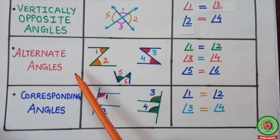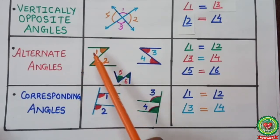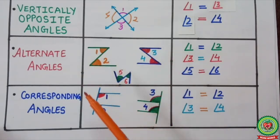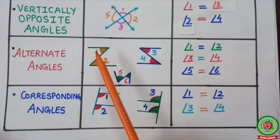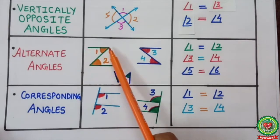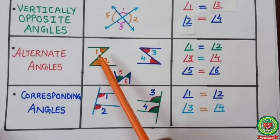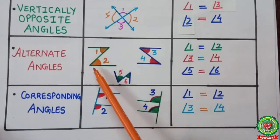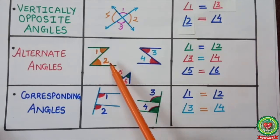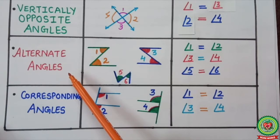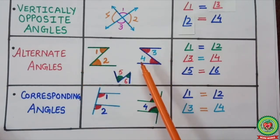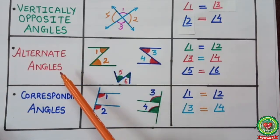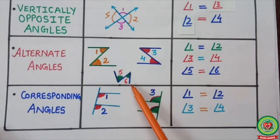The second type is alternate angles. Wherever a Z shape forms, the angles are known as alternate angles. With the first two lines, inside there is angle one, and with the other two lines, inside there is angle two. Angle one and angle two lie in a Z shape, so they are alternate angles. Similarly, angle three and angle four are alternate angles, and angle five and angle six are alternate angles. Alternate angles are also equal.